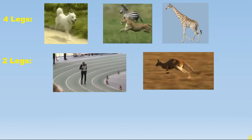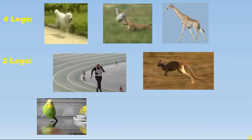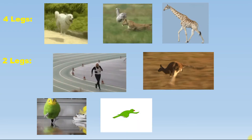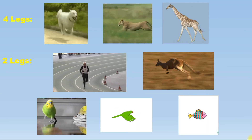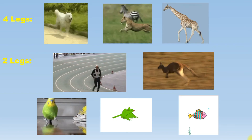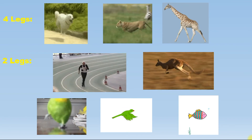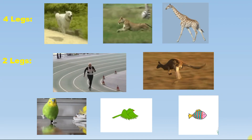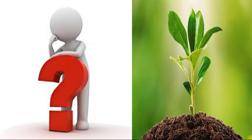Kangaroos also use two legs to move. Birds use hind limbs for walking and wings for flying. Fishes use fins for swimming. In this way, different organisms use different organs for movement. Then what about plants — do they show movement? Yes, plants also show movement. Plants don't have special organs to move, but they still show movement.